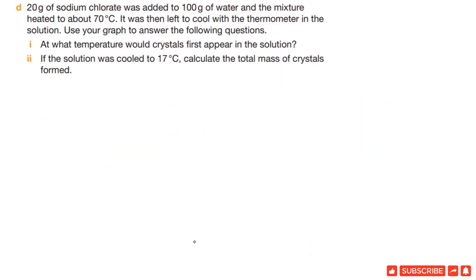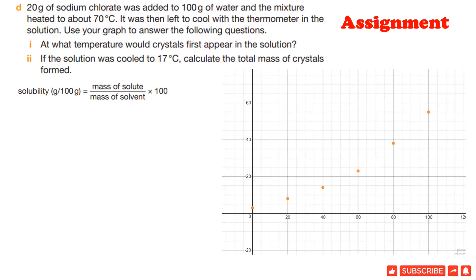Question D. 20 grams of sodium chloride was added to 100 grams of water and the mixture heated to about 70 degrees Celsius. It was then left to cool with a thermometer in the solution. Use your graph to answer: at what temperature would crystals first appear in the solution? And if the solution was cooled to 17 degrees Celsius, calculate the total mass of crystals formed. Using this formula and the graph, it is your assignment. Try yourself and write your answers in the comment box. Let me know if you have problems and I will give the solution in the next video.